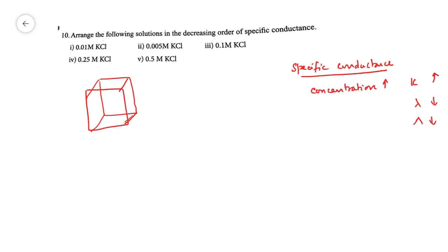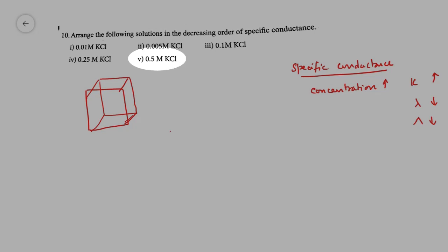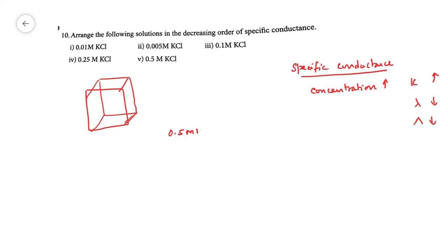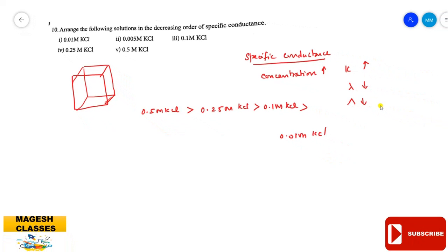So in case of specific conductance: as concentration increases, κ increases; as concentration increases, λm (molar conductivity) decreases. The solution with higher concentration has more specific conductivity: 0.5 M KCl > 0.25 M KCl > 0.1 M KCl > 0.05 M KCl > 0.01 M KCl — arranged in decreasing order of specific conductance.